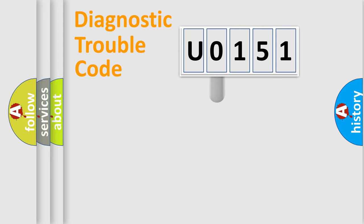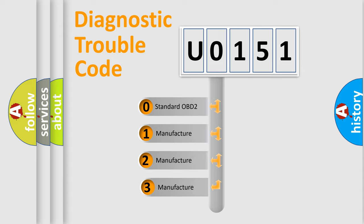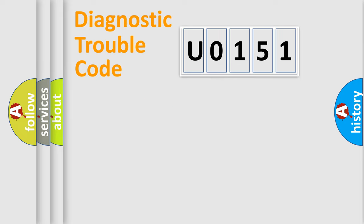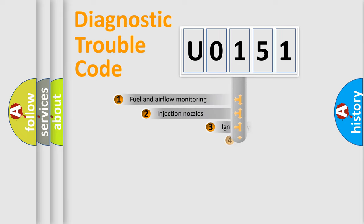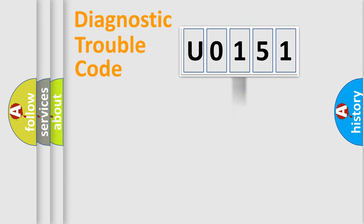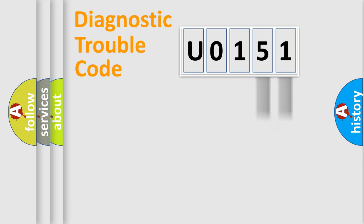This distribution is defined in the first character of the code. If the second character is expressed as 0, it is a standardized error. In the case of numbers 1, 2, or 3, it is a more specific, car-manufacturer error. The third character specifies a subset of errors. This distribution is valid only for the standardized DTC code.